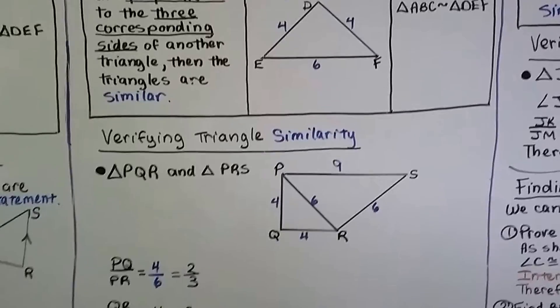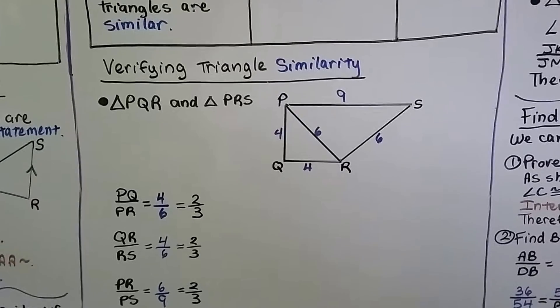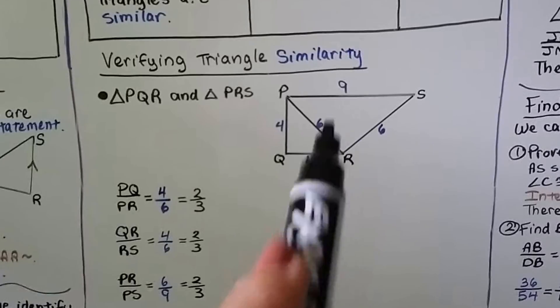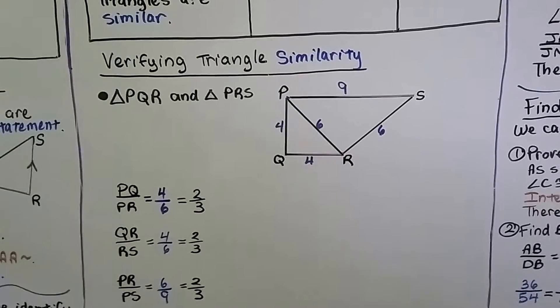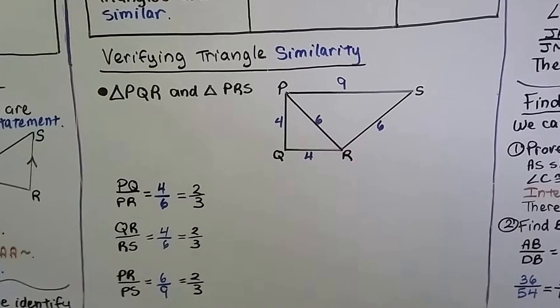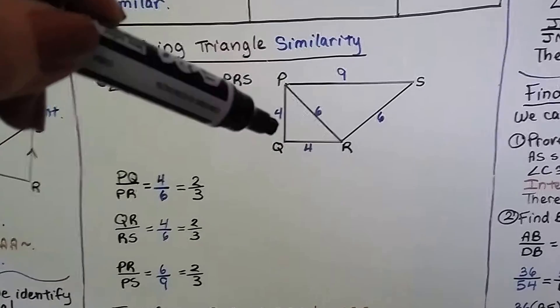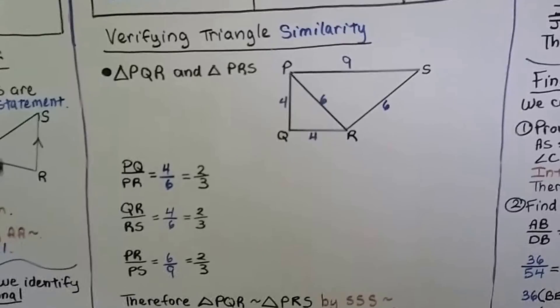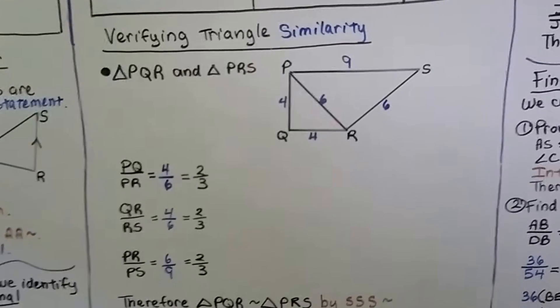Here's verifying triangle similarity. Let's look at the diagram. We have this one figure that has two triangles: triangle PQR and triangle PRS. PQ is a 4 and it corresponds to PR that is a 6. 4 over 6 simplifies to 2 thirds.